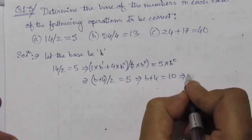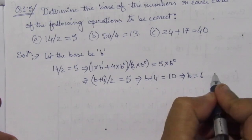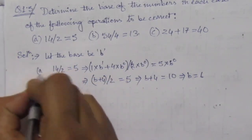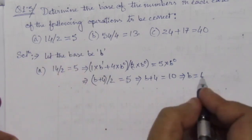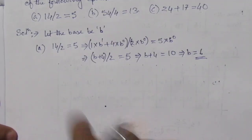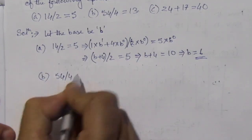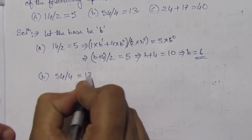So for the first problem, for this one, the base is 6. The next problem is b: 54/4 = 13.